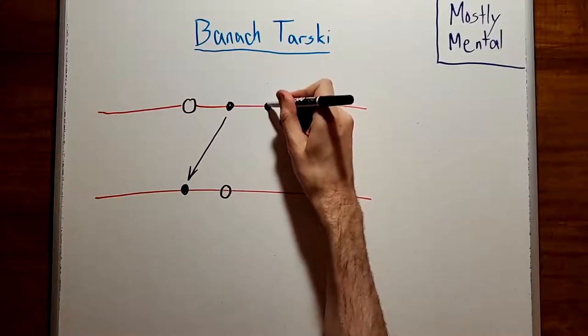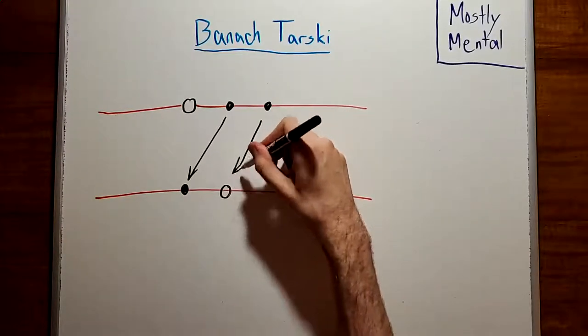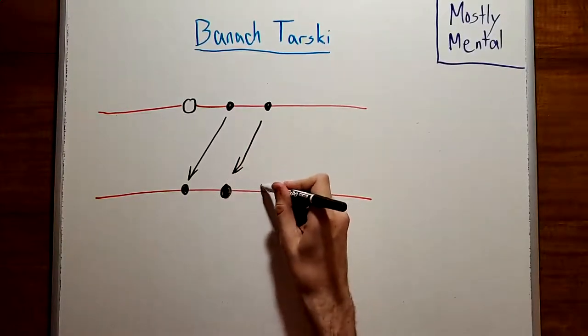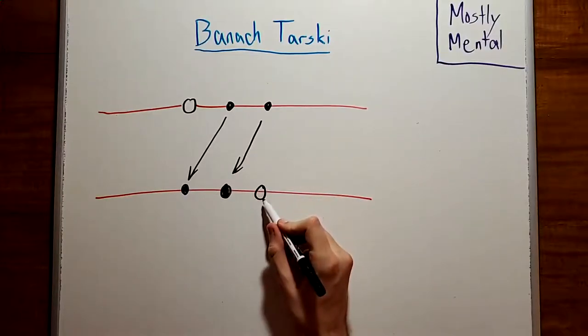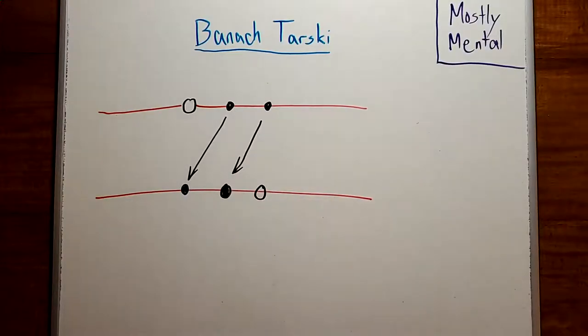And we could take another point to fill in that hole, but that point's gotta come from somewhere, and so that'll leave a hole too. So, this is impossible, right? We're always going to end up with another hole somewhere? Well, not quite. It can't be done with a finite number of points, but it can be done.